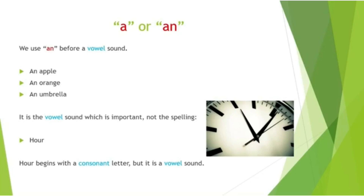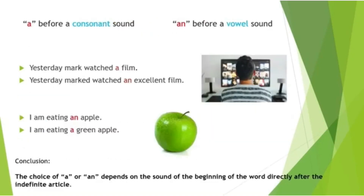We use 'an' before a vowel sound. For example, 'an apple' starts with a vowel sound, 'an orange' — again a vowel sound, and 'an umbrella'. The same rule applies here: the sound is what matters, not the spelling. For example, the word 'hour' begins with the consonant letter 'h', but the pronunciation is a vowel sound. Therefore we use 'an hour'.